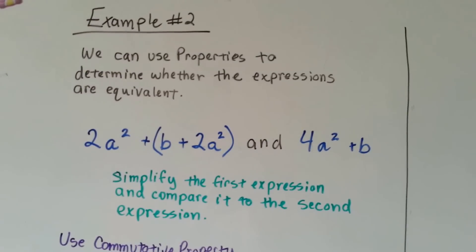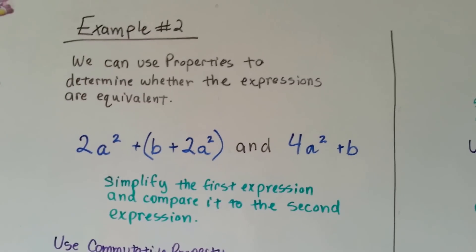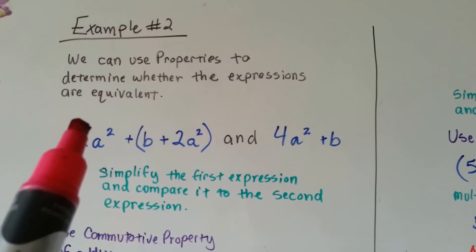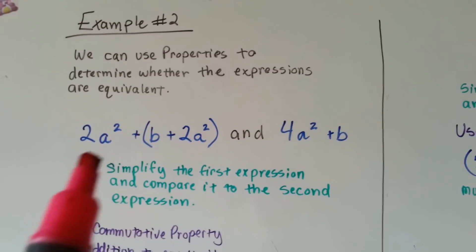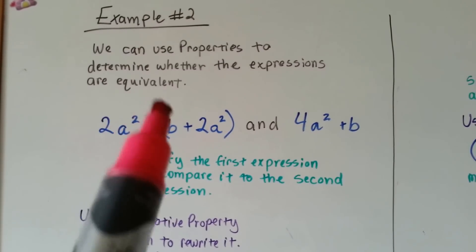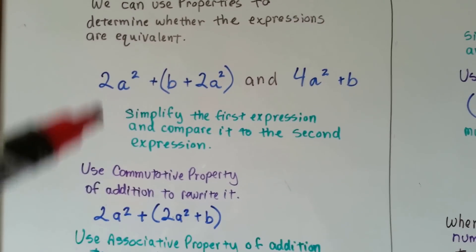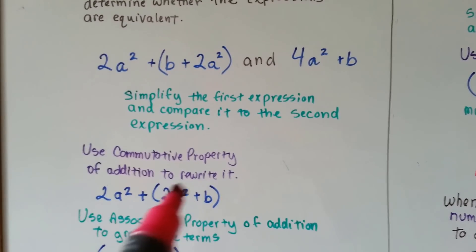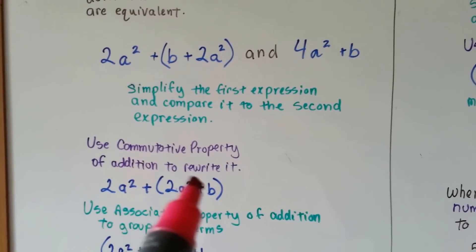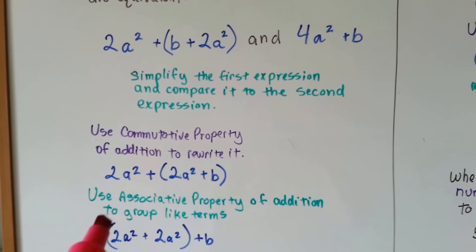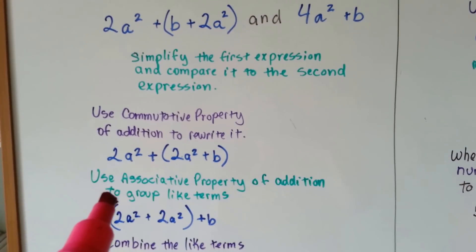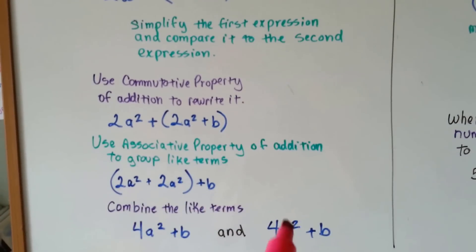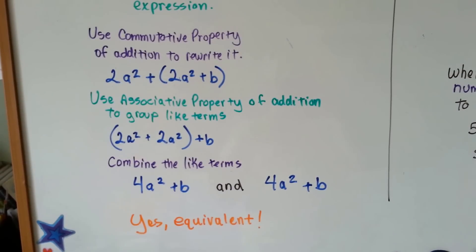What if we had two different expressions we were trying to compare? This is example number two in your book. If we were trying to compare this expression to this expression to see if they were equivalent — this one's got three terms and this one's got two terms. We have to simplify the first expression to compare it to the second one. We use the commutative property of addition to rewrite it, putting the b in the back and the 2a squared into the middle. Then we use the associative property of addition to group the like terms. 2a squared plus 2a squared is 4a squared plus b, and now we compare it to 4a squared plus b — they're equivalent.